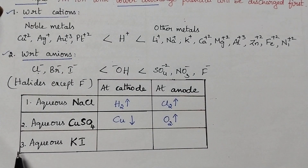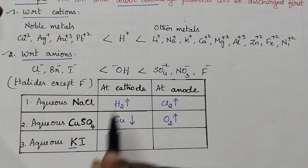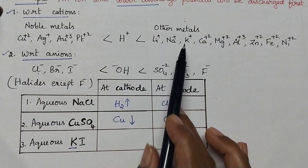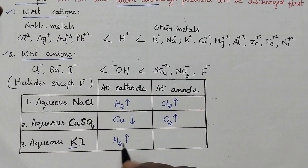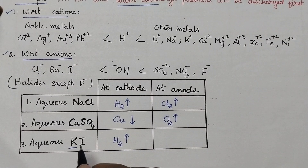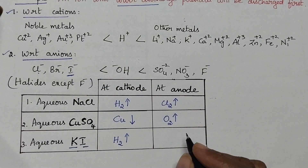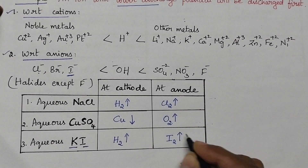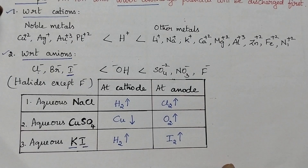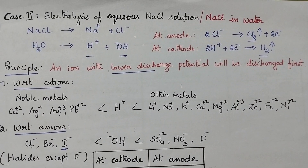Let us move on to the electrolysis of aqueous potassium iodide solution. Here the metal is an 'other metal', so H⁺ ions are having lower discharge potential than potassium, and hence at the cathode hydrogen gas will be liberated. Whereas at the anode, the halide iodide ion is having lower discharge potential than OH⁻ ions, so iodine gas will be liberated at the anode.